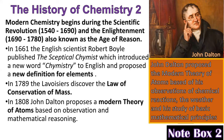In 1808, John Dalton proposed a modern theory of atoms based on observation and mathematical reasoning. At the time, atoms were believed to be indivisible tiny particles or geometric shapes — an idea that came from the Greek philosopher Democritus. Dalton proposed his modern theory based on his observations of chemical reactions, the weather, and the study of basic mathematical principles.